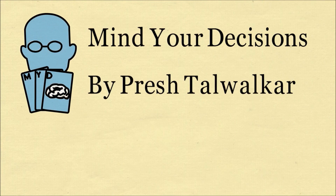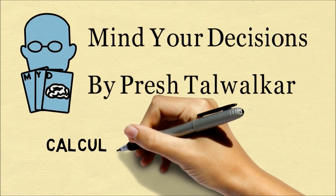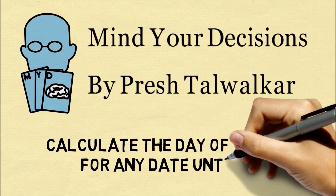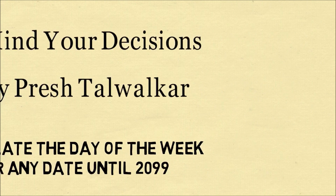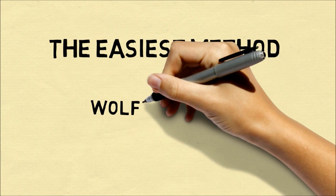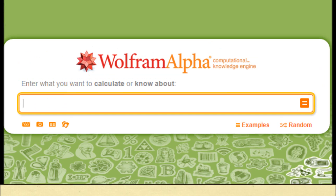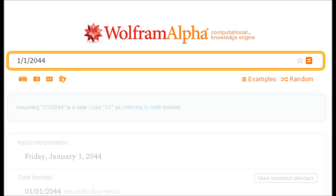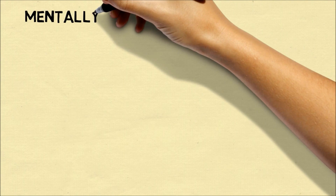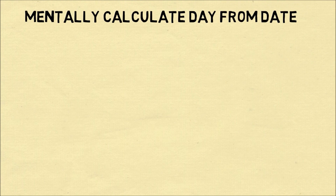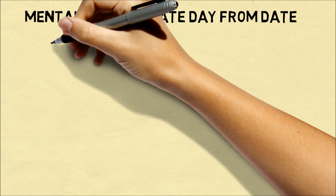Hi, this is Presh Talwalkar. In this video, I'm going to describe how you can calculate the day of the week for any date until the year 2099. The easiest way to do this on a computer is to use a website like Wolfram Alpha — you simply type in the date and it will tell you which day of the week you get. But in this video, we're going to focus on how you can mentally calculate the day of the week when you're given a date.